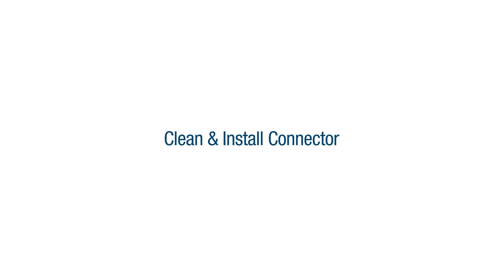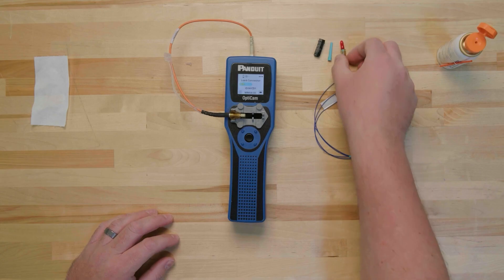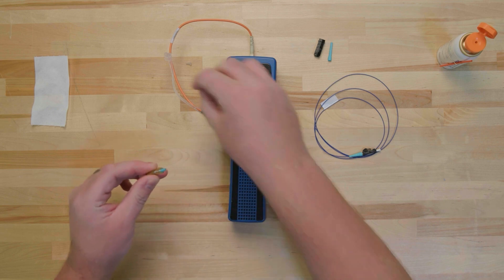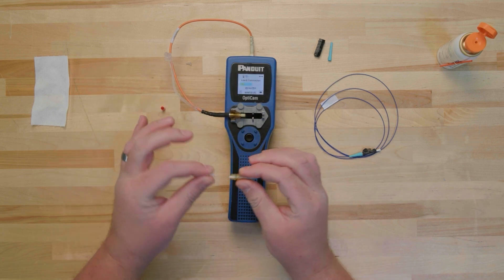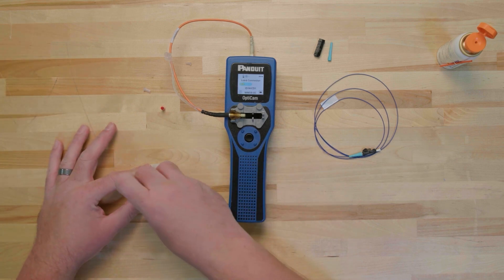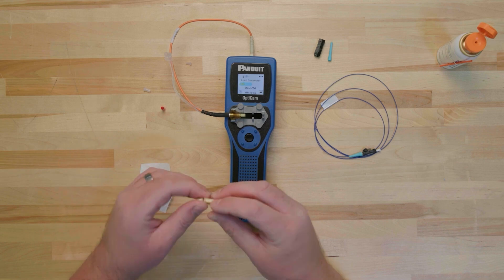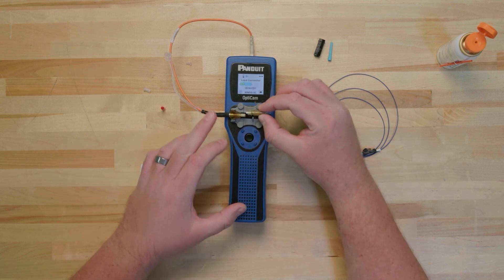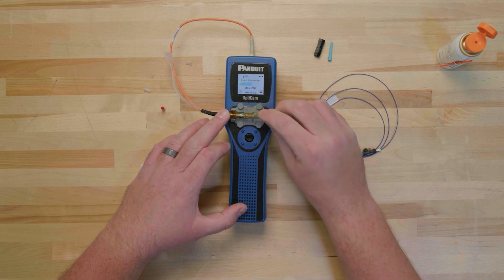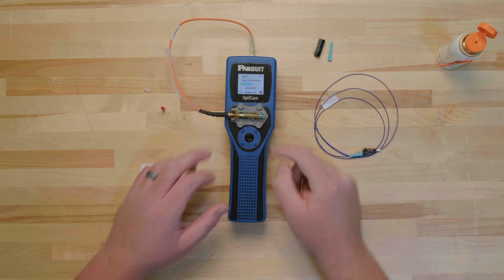Next, we'll clean and install the connector. It's important to clean the connector even if it's in a factory sealed package as it could still be contaminated. To clean the connector, remove the dust cap from the connector ferrule. Clean the ferrule end face with an approved wipe and cleaning solution by dragging it across the wipe from the wet portion to the dry portion. Insert the ferrule end of the connector into the adapter and snap the connector into the cradle.